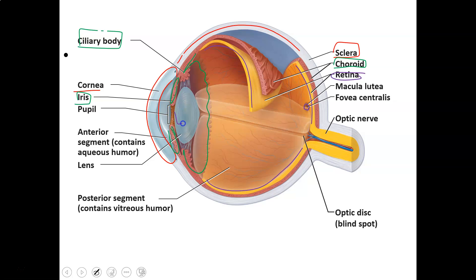The lens itself helps do the focusing for your eye. You can change the shape of the lens by pulling on it with the ciliary body. Depending on how you pull it and flatten it, that helps you see things far away or up close. The lens does a lot of the work to help you focus light.